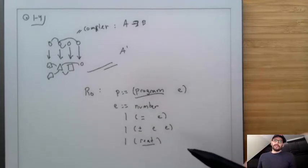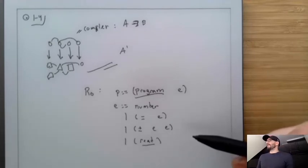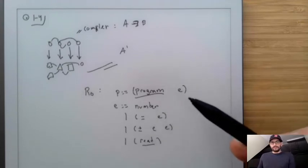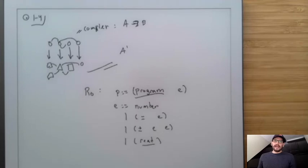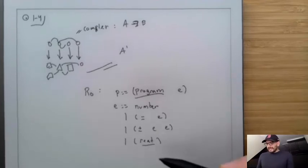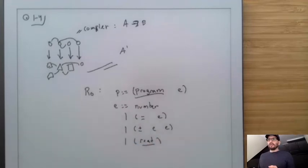This is a very simple language — similar to ISWIM or the basic language from the organizational programming languages class, except way simpler because we only have numbers. We have a single unary function — negate — and a single binary function — add. But it's a little more complicated because we have this read function. What read does is read input from the user. The whole point of read is to make it so that our programs cannot always be reduced to a value without actually running them.